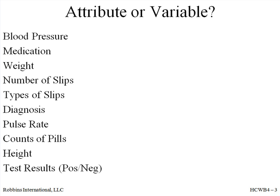Height — similar to weight, this is measured, so variables data. Test results: positive or negative — these are attribute data if they are pass-fail or such. Test results that show blood count, cholesterol levels, etc. would be variables data.